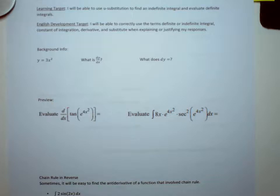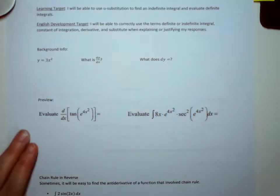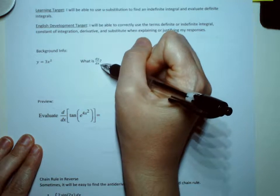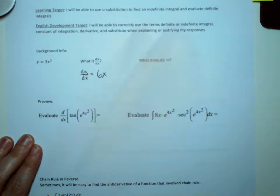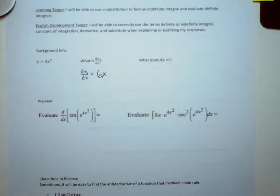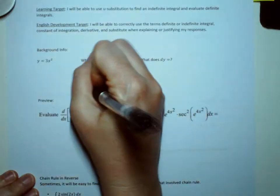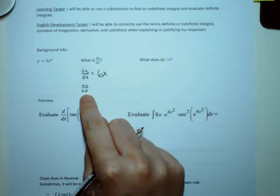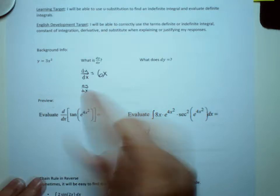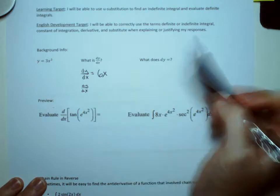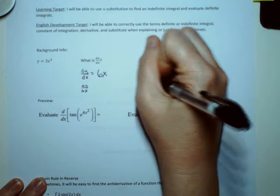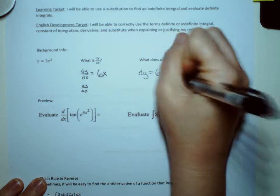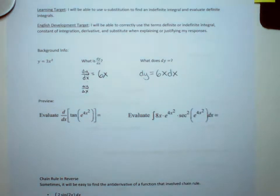A little background and preview: if I give you the function y = 3x² and ask for dy/dx, that's just asking you to take the derivative. The derivative of 3x² is 6x. Remember that dy/dx is really the same thing as a change in y over a change in x where the change in x is getting really close to zero. In theory these are both just numbers, so if I ask what does dy equal, I can multiply both sides by dx and get dy = 6x dx.